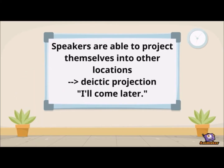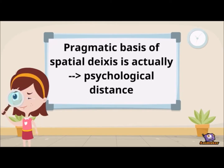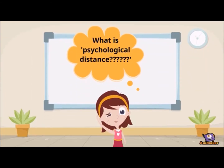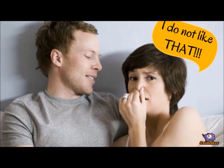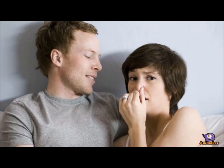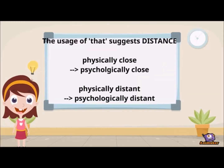But the truly pragmatic basis of spatial deixis may actually be the so-called psychological distance. To understand what this really is, consider the following situation: a woman is sniffing the perfume of a man lying next to her and remarks in a whisper to herself, 'I don't like that.' Since the man — and respectively the perfume — is physically close to her, it would be more appropriate to use this instead of that. The usage of that suggests distance.